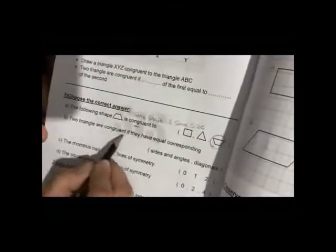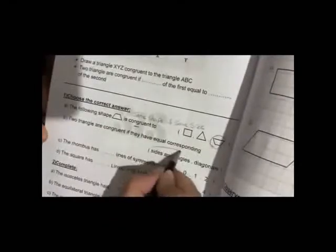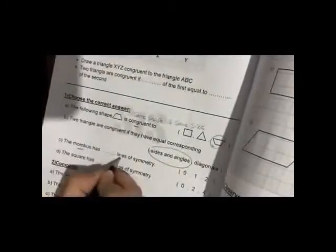Two triangles are congruent if they have equal corresponding sides and angles. The rhombus has how many lines of symmetry?